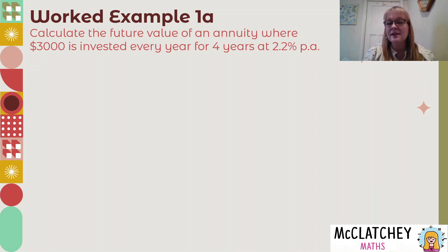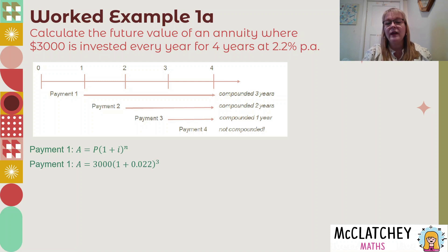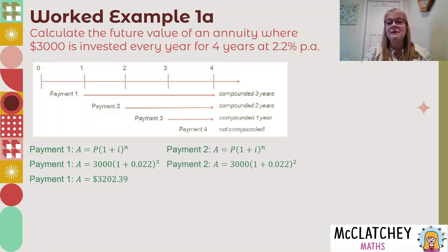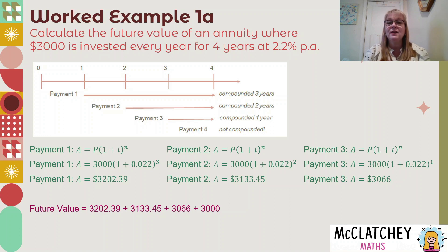Let's calculate the future value of an annuity where $3,000 is going in every year for four years at 2.2% per annum. For the first payment we apply the compound interest formula raised to the power of three — using a rate of 0.022 compounding once per year — giving $3,202.39. The same happens for payment two raised to the power of two, payment three raised to the power of one, and the fourth payment of $3,000 receives no compounding at all.